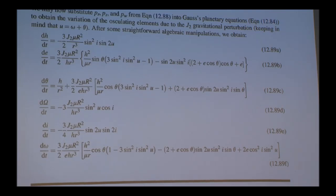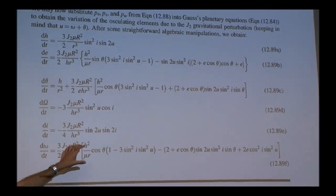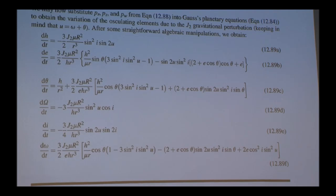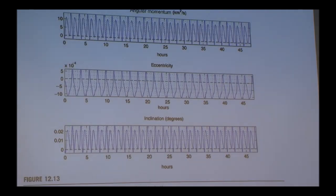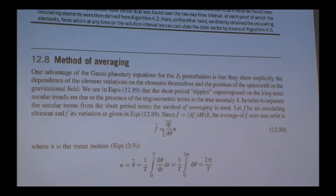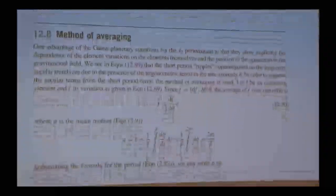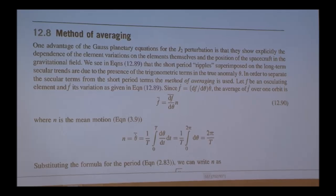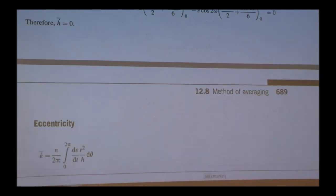Much more useful is averaging these equations out — removing everything that is an oscillation. The main one is the cosine or sine of theta, which represents going around the orbit. So what people do is take these equations and average them over an orbit to see what happens. You do an integral over the orbit and remove that oscillation. If you follow that procedure, you get much nicer equations for J2 — this is what the book gives you.